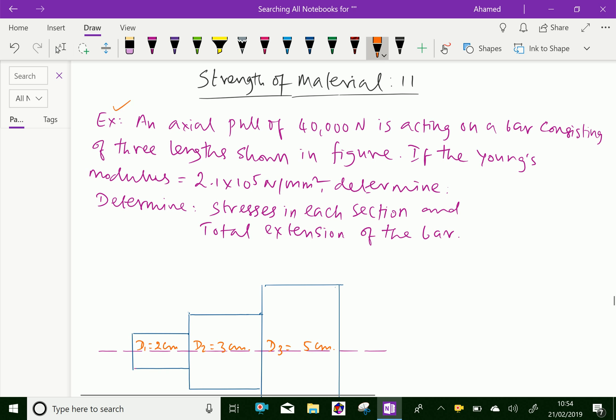Look at this example. An axial pull of 40,000 Newton is acting on a bar consisting of three lengths shown in figure. If the Young's modulus is 2.1 times 10 to the power of 5 Newton per mm squared, determine stresses in each section and total extension of the bar.